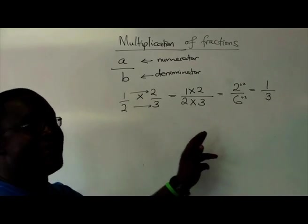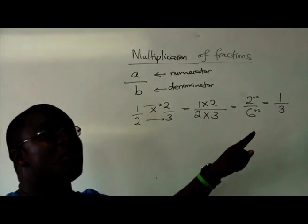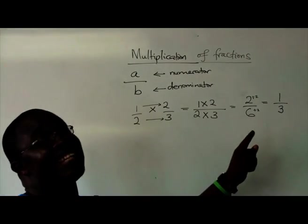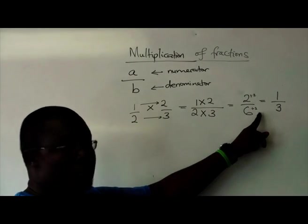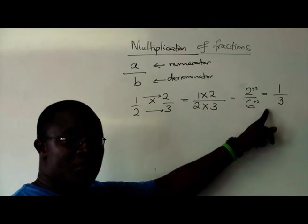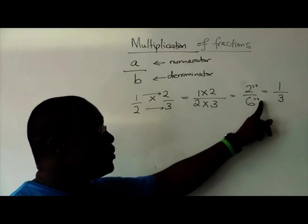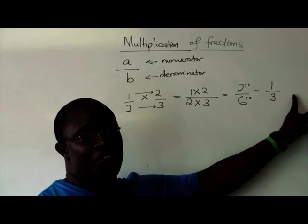2 divided by 2 would be 1. 6 divided by 2 would be 3. So what we simply did was, we took our answer 2 out of 6 and we divided by the common factor. So what you do to the top, you also do to the bottom.